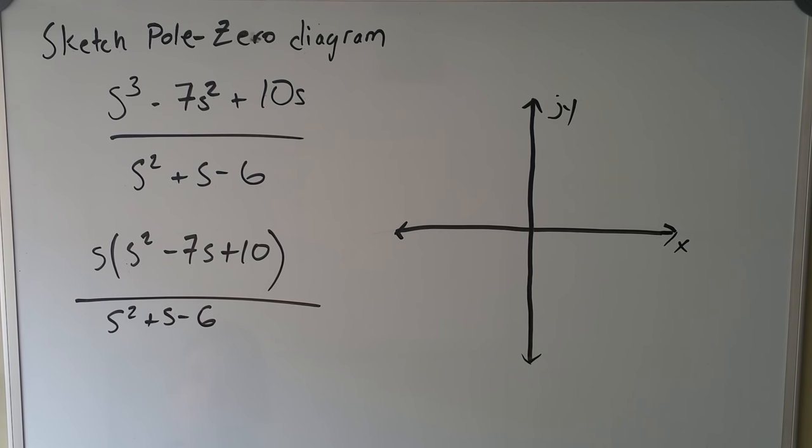And then we want to factor both top and the bottom to see if we can cross anything out. If we can't, then we can move on and start plotting right away. So to factor this out, we have s then we do s minus 5 and then s minus 2.